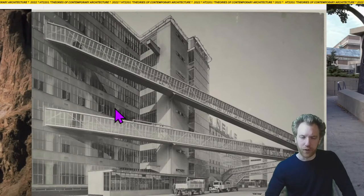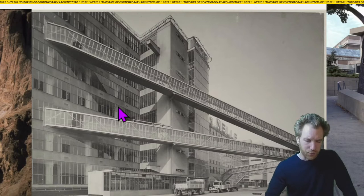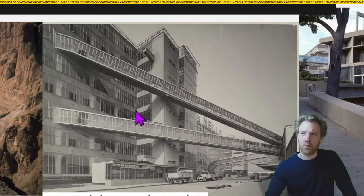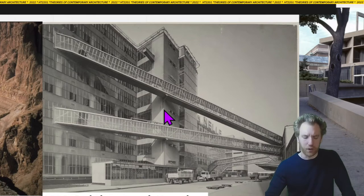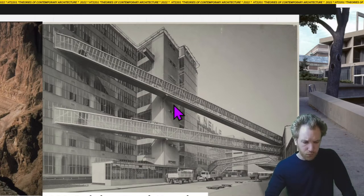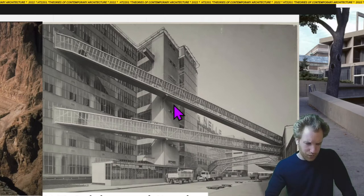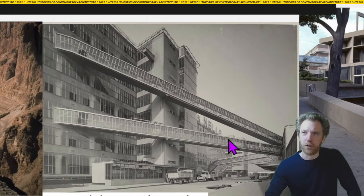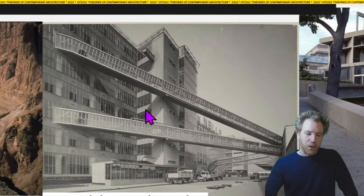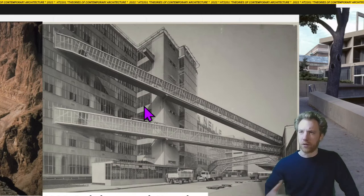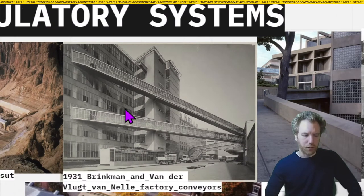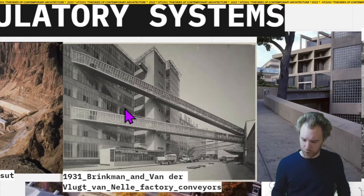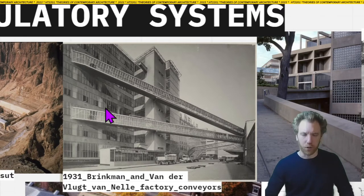To set another foundation stone: in early modernism, one of the great modernist industrial buildings is the Van Nelle Factory by Brinkman and Van der Vlugt — a factory in the Netherlands for processing comestibles. It has beautiful and extraordinary ramps, some for processing goods, others for processing workers. The ramp in modernism, in the early 20th century, began to take on a kind of heroic status.